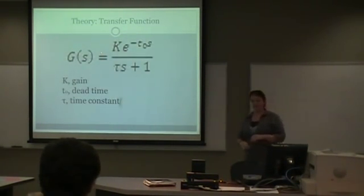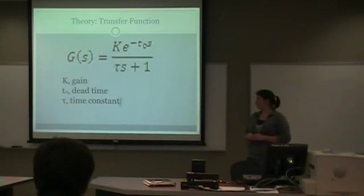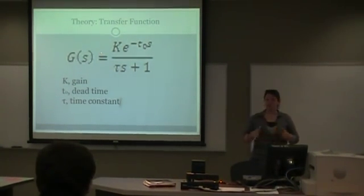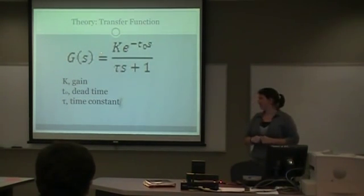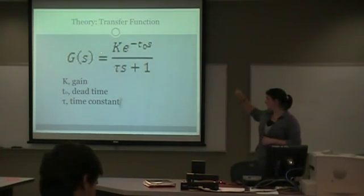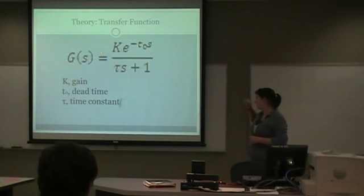Here is the transfer function which would be useful for our system to determine what the output would be, to predict what the output would be given an input. K here is the gain of the system, T_0 is the dead time, and tau is the time constant.